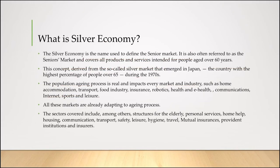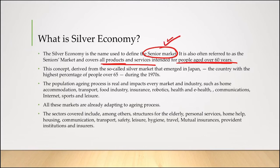So, what is silver economy? Silver economy is a term used to define the senior market. It covers all the products and services which are intended for people aged over 60 years — that is, all the products and services that senior citizens use come under the senior market. This concept actually originated in the 1970s and has been derived from a so-called silver market that emerged in Japan.